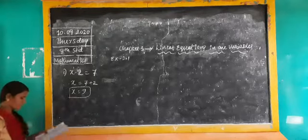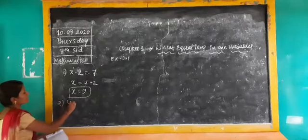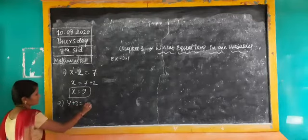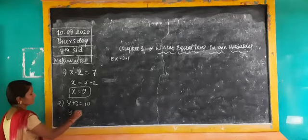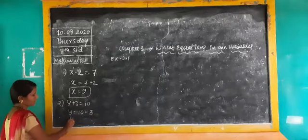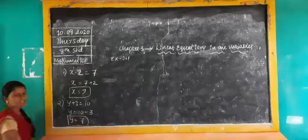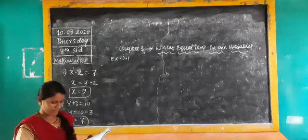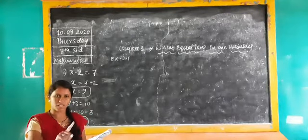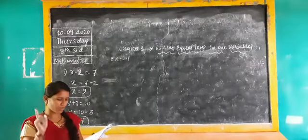Find the value of x: x equals 9. Second question: y plus 3 is equal to 10. Keep y on one side — y equals 10 minus 3, so y equals 7. Third question: 6 is equal to z plus 2. Keep z as it is; take plus 2 to the other side — 6 minus 2 gives 4. So z equals 4.